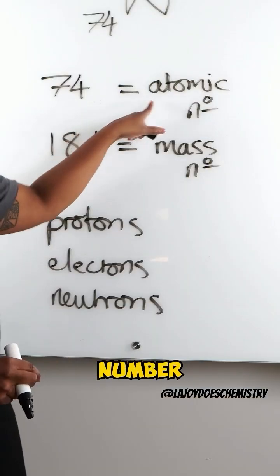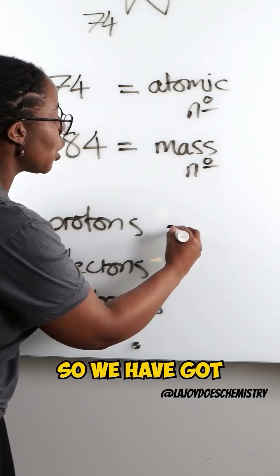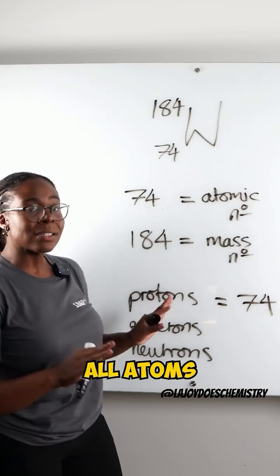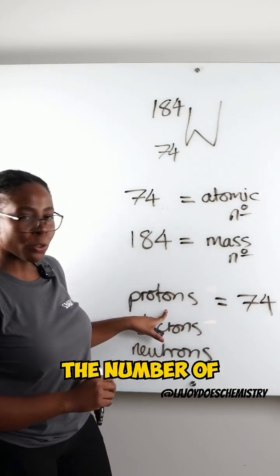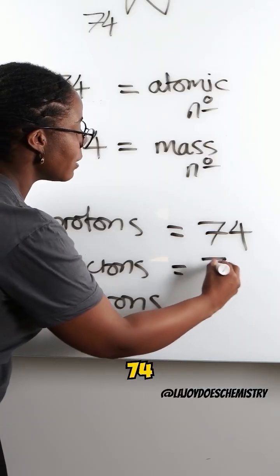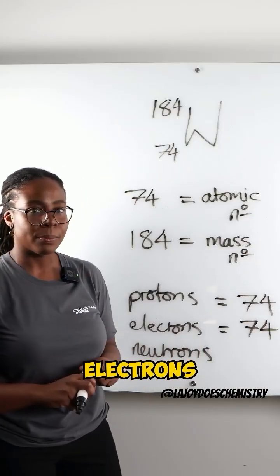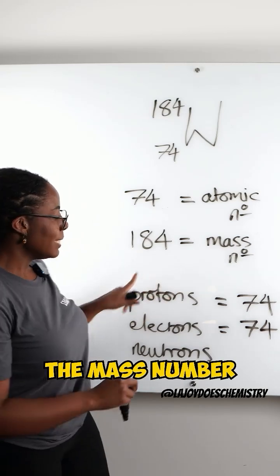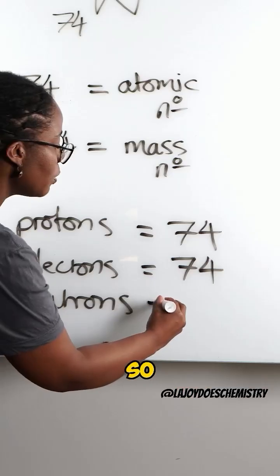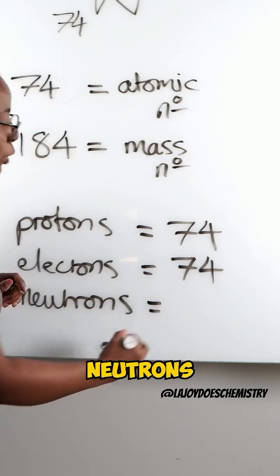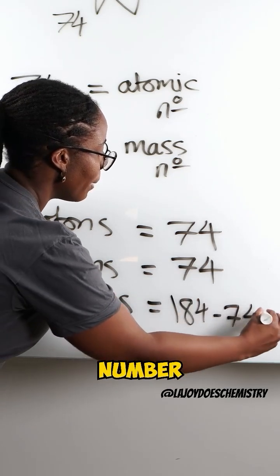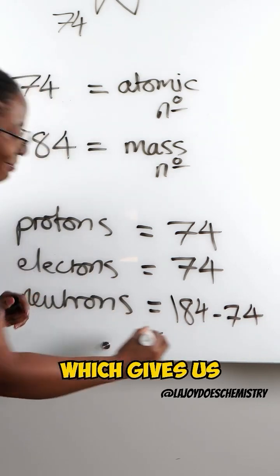The atomic number tells us the number of protons, so we have 74 protons. All atoms are neutral, which means the number of protons and the number of electrons are the same, so also 74 electrons. The mass number tells us the number of protons plus the number of neutrons. So to figure out the number of neutrons, we take the mass number minus the proton number, which gives us 110.